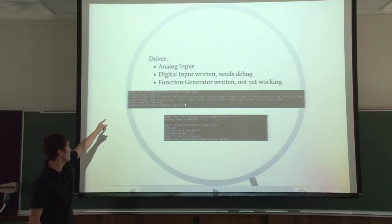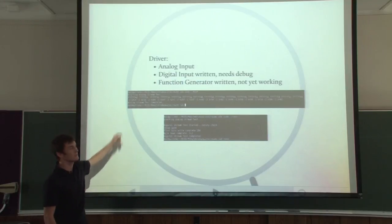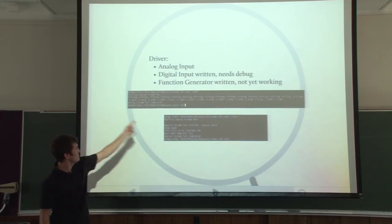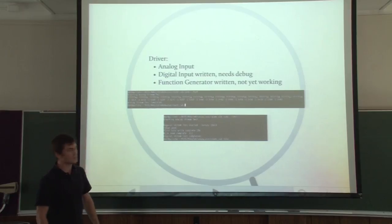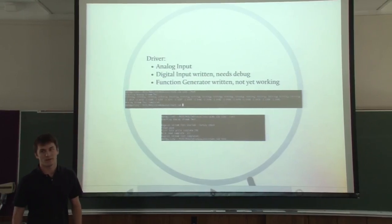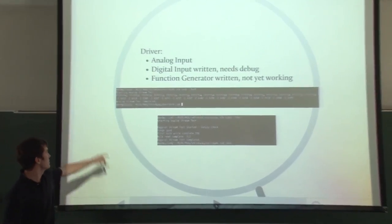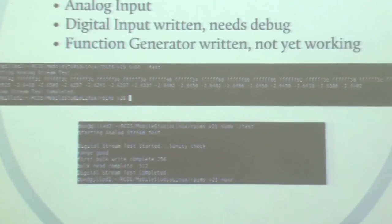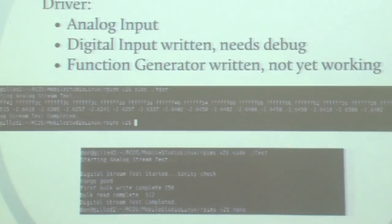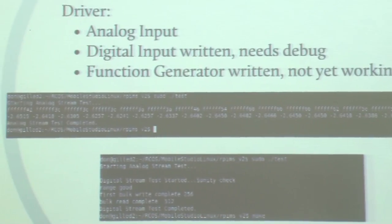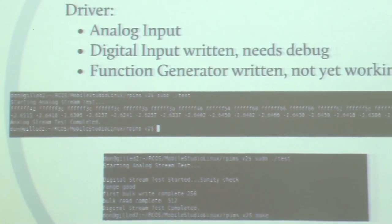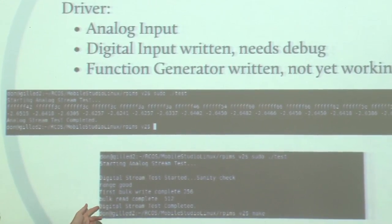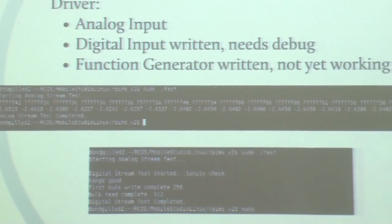The first image up here — it's probably kind of hard to see — is just a data stream coming in from the analog input. You can see it was measuring minus 2.6 volts. And this is just one of the working digital input tests.